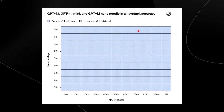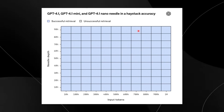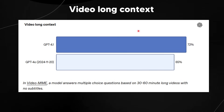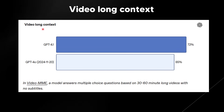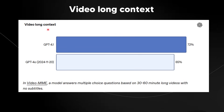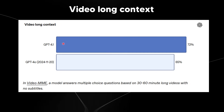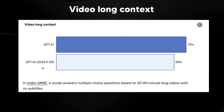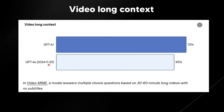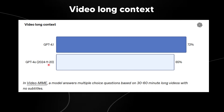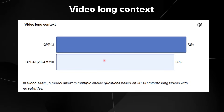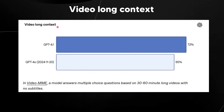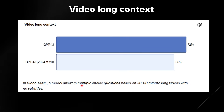This long-context capability will likely have many real-world use cases. The model is surprisingly good at video long context and is also decent in terms of vision capabilities — performing slightly better than GPT-4.0. However, since OpenAI updated GPT-4.0 in 2025, I presume GPT-4.0 is probably on par with GPT-4.1 on vision benchmarks. The video long context test has the model answer multiple-choice questions based on 30–60 minute long videos with no subtitles.